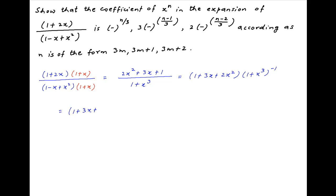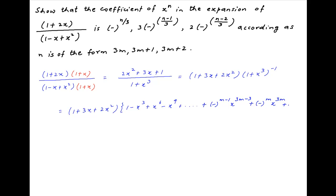And this is equal to 1 plus 3x plus 2x square multiplied by the binomial expansion of 1 plus x cube whole raise to the power minus 1, which is 1 minus x cube plus x raise to the power 6 minus x raise to the power 9, plus and so on, plus minus raise to the power m minus 1 multiplied by x raise to the power 3m minus 3, plus minus raise to the power m multiplied by x raise to the power 3m, plus and so on.